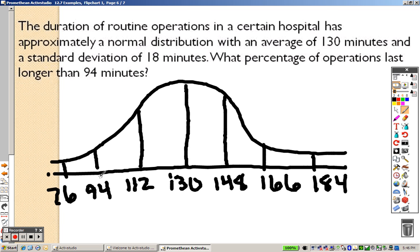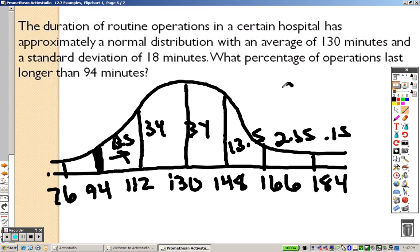So, now it's saying what percentage of operations last longer than 94. Longer than 94 means anything higher. So, basically, it's the same answer as the last problem. This is 13.5, 34, 34, 13.5, 2.35, 0.15. So, the correct answer when you add them all up is 97.5%.